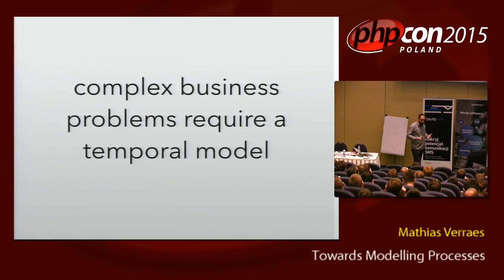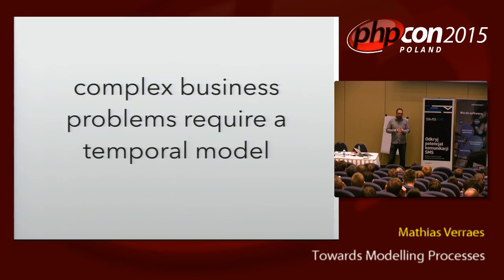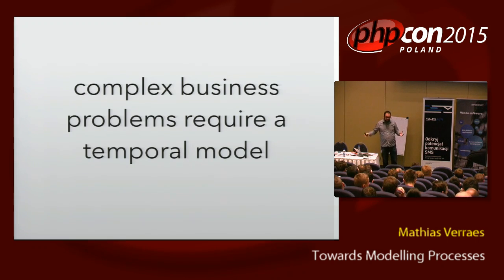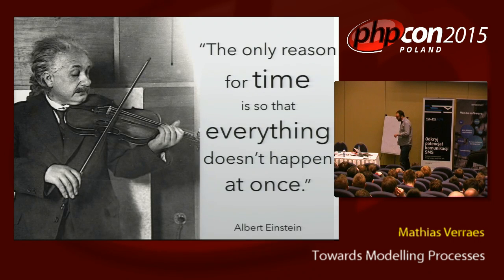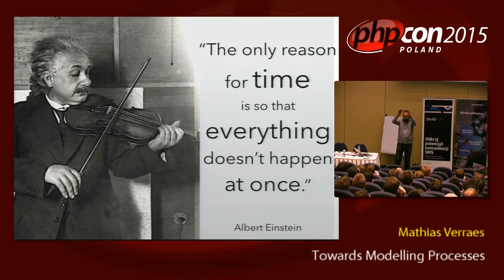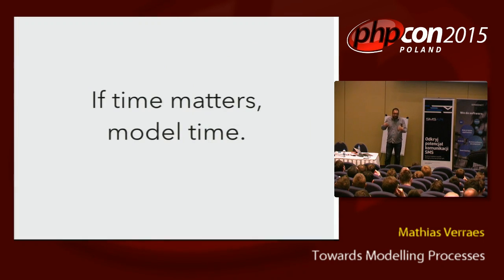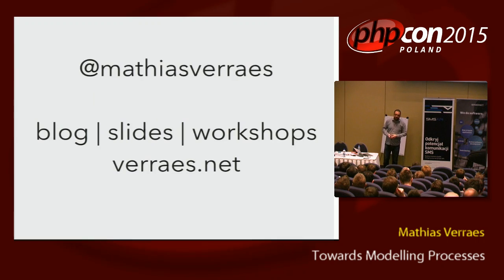Back to my point at the beginning: when you have complex business processes, you really need a temporal model. You need a way of expressing things happening over time, the effects of one process on another, events, constraints, intentions, commands, branching. And of course, if you talk about temporal models, you have to quote Einstein: "The only reason for time is so that everything doesn't happen at once." A UML diagram with just things shows everything at once — you don't see the progress over time. So if time matters in your system, model time. Thank you for listening.